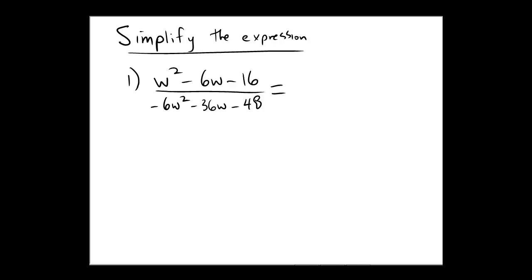I'm going to try to keep track of my numerator and denominator in different colors here, green and red if I can remember. So in the numerator, we have w² - 6w - 16, and in the denominator, we have a polynomial from which we could factor out a GCF, a greatest common factor. The greatest common factor among 6, 36, and 48 would be the number 6.